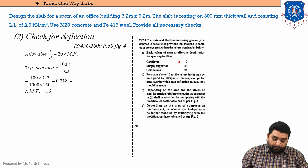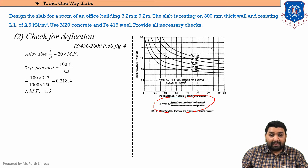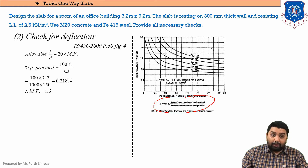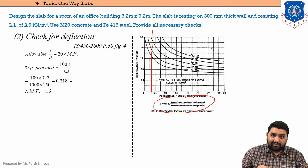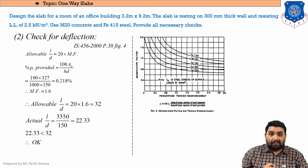For pt = 0.218, we need to find the fs value from the figure, using the ratio of area of steel provided to area of steel required. The fs will not be exactly 240 in this case. Interpolating the curves for pt = 0.218, the modification factor MF comes out to be 1.6.